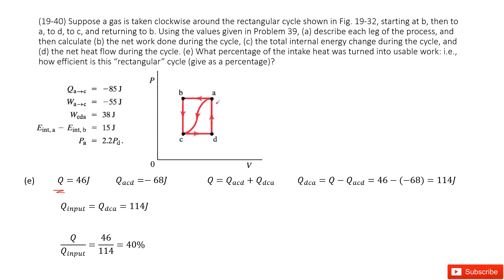We can consider input heat equals DCA because it runs one direction. Now, how can we do it? The net heat equals ACD plus DCA.